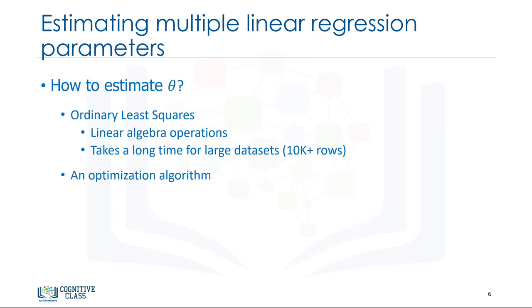The second option is to use an optimization algorithm to find the best parameters. That is, you can use a process of optimizing the values of the coefficients by iteratively minimizing the error of the model on your training data. For example, you can use gradient descent, which starts optimization with random values for each coefficient, then calculates the errors and tries to minimize it through wise changing of the coefficients in multiple iterations. Gradient descent is a proper approach if you have a large data set. Please understand, however, that there are other approaches to estimate the parameters of the multiple linear regression that you can explore on your own. After you find the best parameters for your model, you can go to the prediction phase.